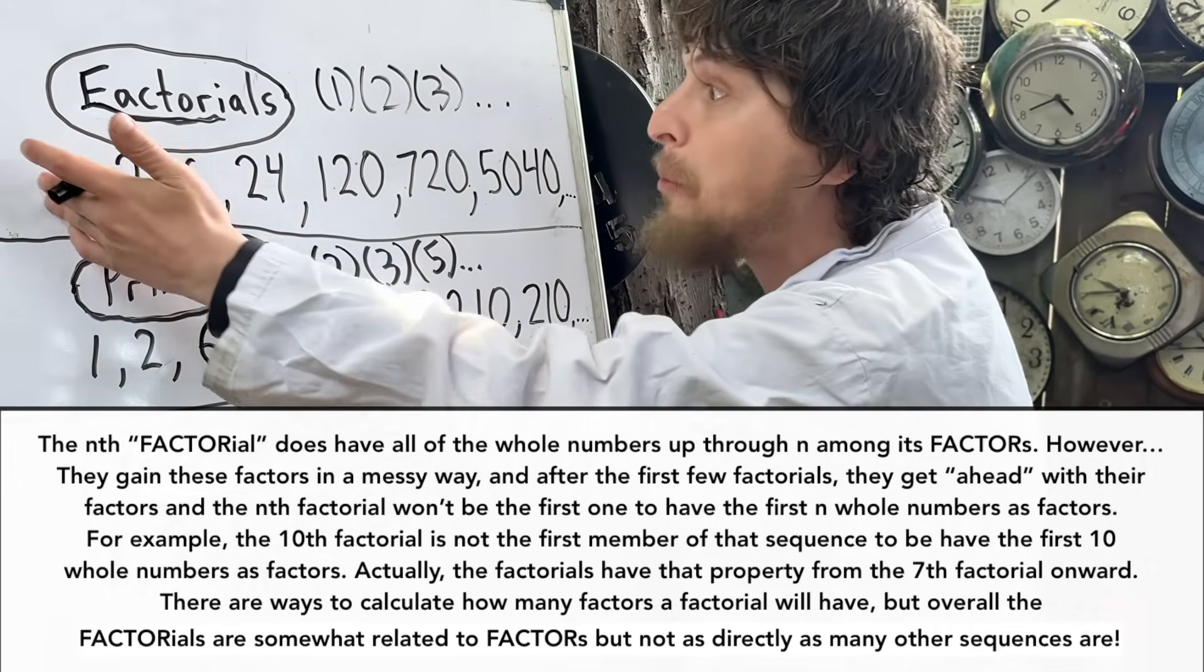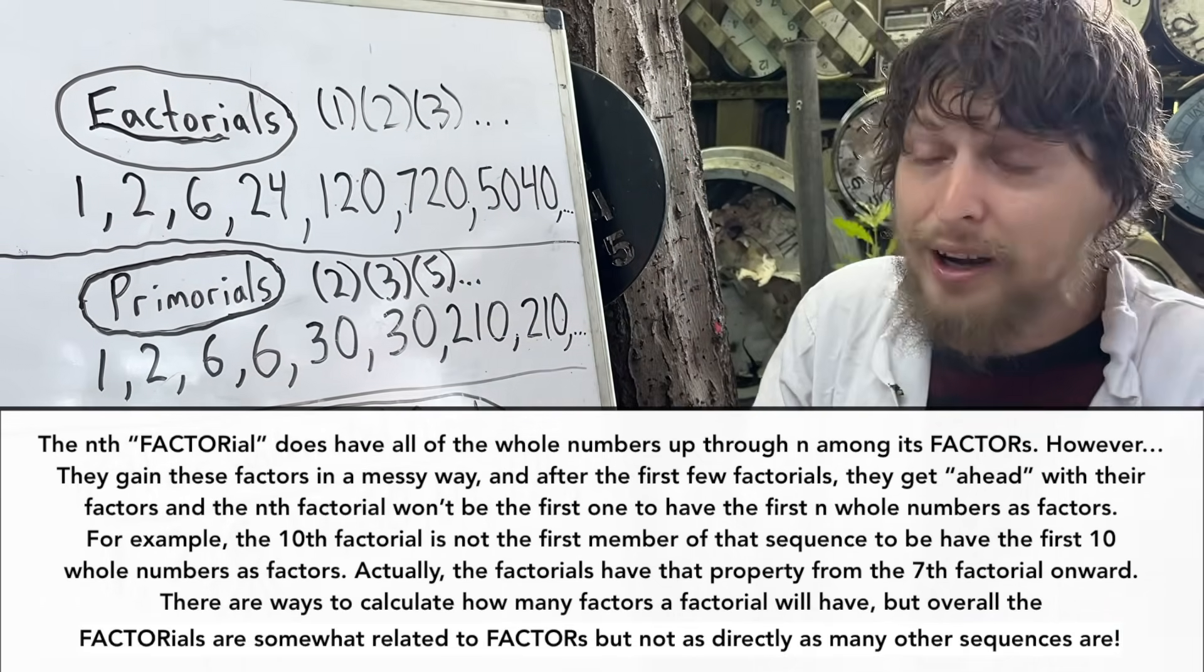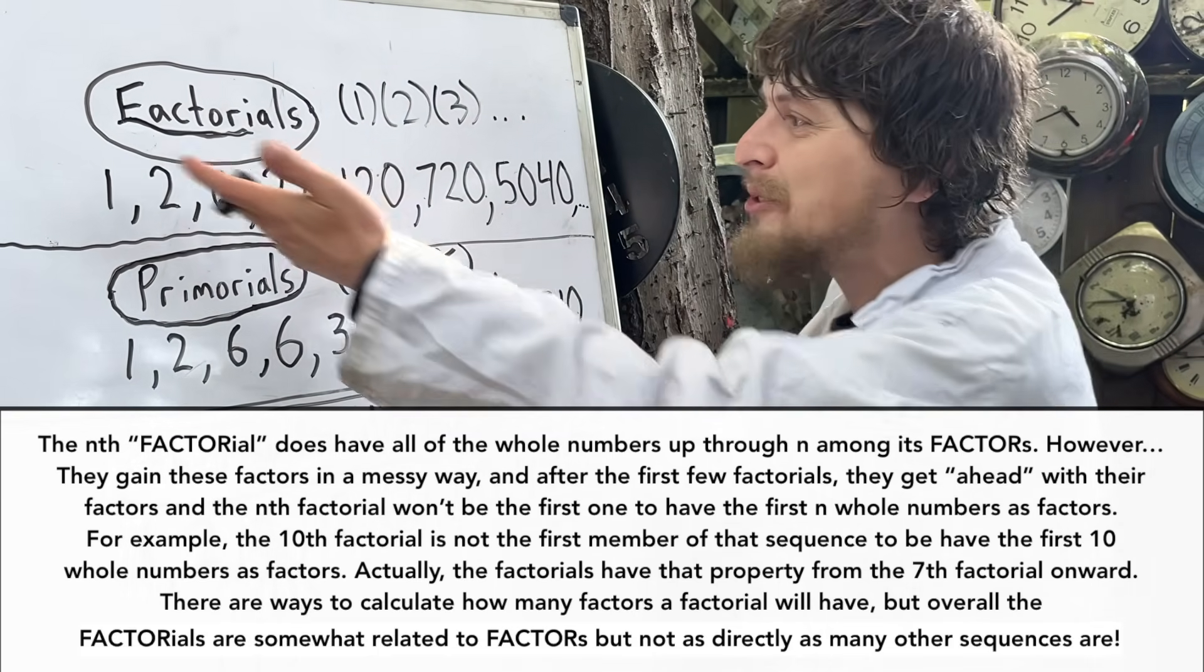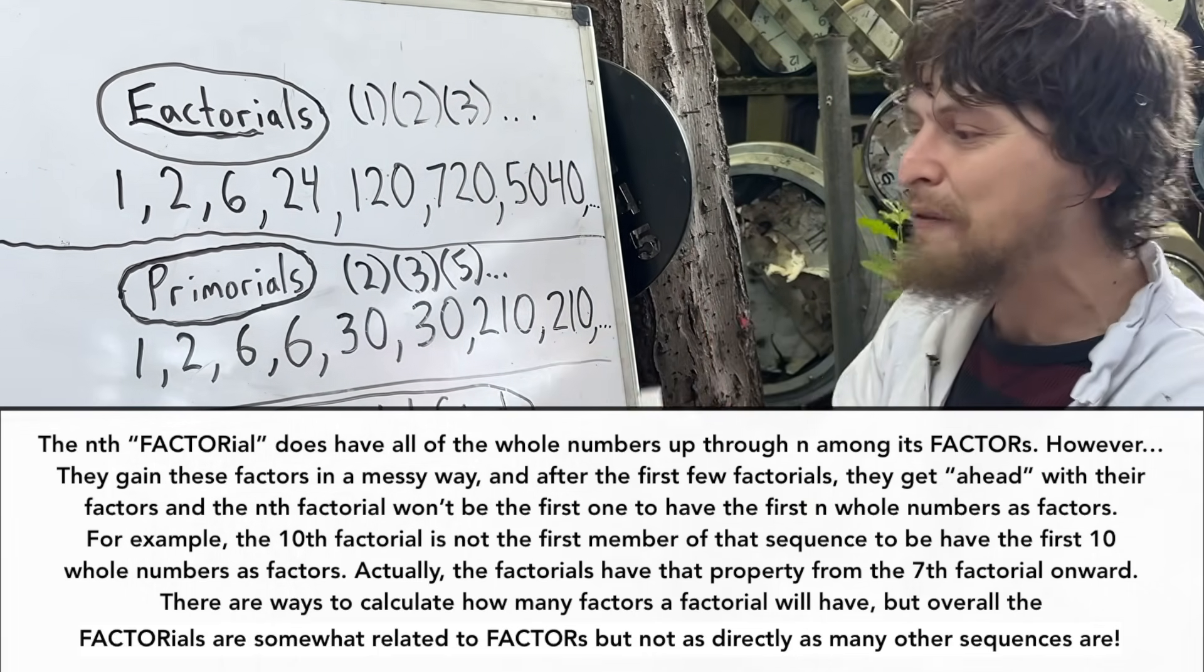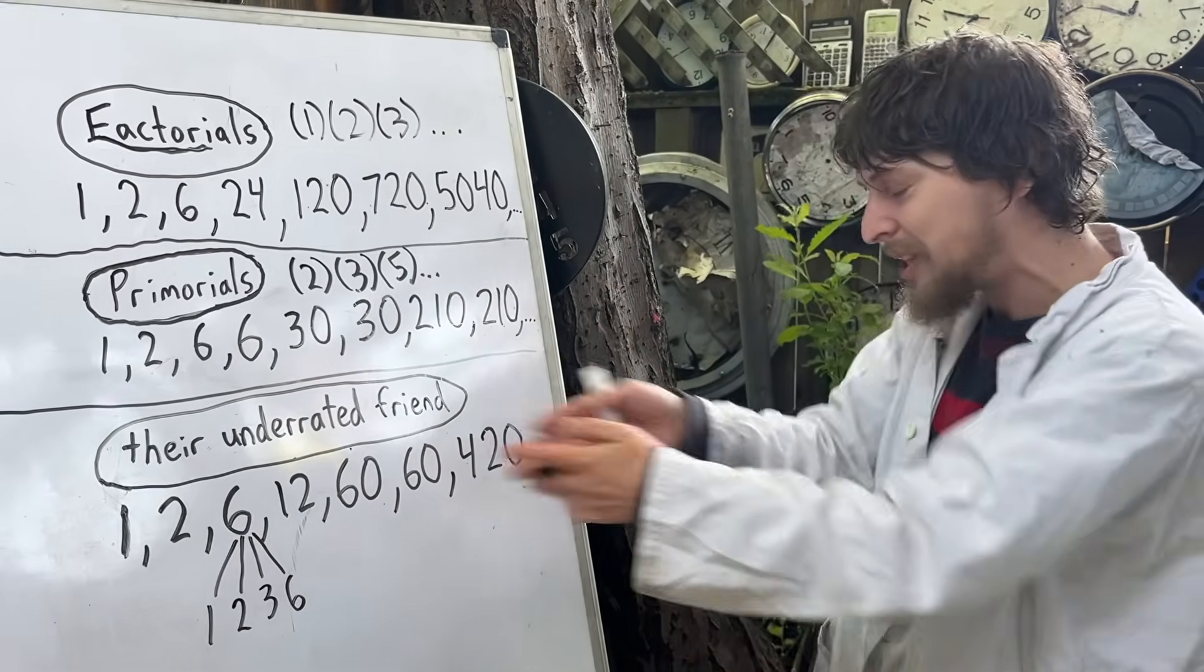So what if we just cared about that reduced, more efficient version of the factorials? The first number that was divisible by 1, the first number divisible by 1 and 2, then divisible by 1, 2, and 3? Well, it would quickly diverge from the factorials, as we see, because that is this sequence here.